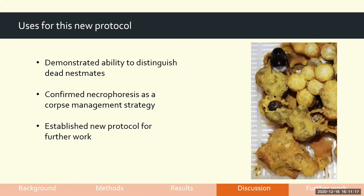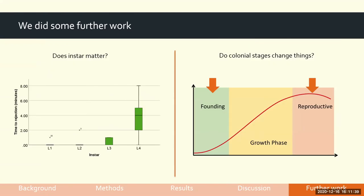We've demonstrated the ability of bumblebees to distinguish dead nestmates and confirmed for the first time necrophoresis as a corpse management strategy in bumblebees. We've also established a new protocol for further research. Additional work looked at whether larval instar matters — there was a significant difference in L4 larvae compared to other instars in the time taken to remove them. We also started to examine whether colony stage changes corpse management behaviour, finding that reproductive-stage colonies took longer to remove corpses but still did so. All of this is summarised in a paper currently being submitted.